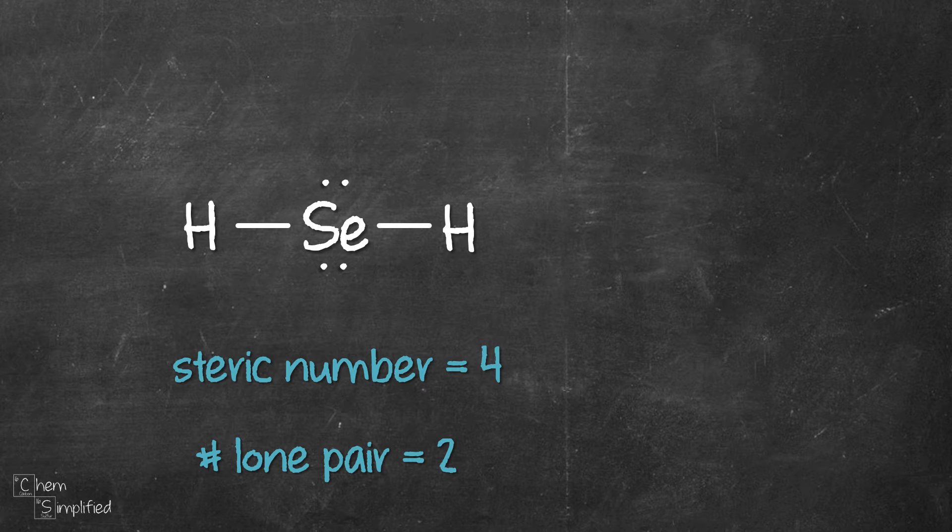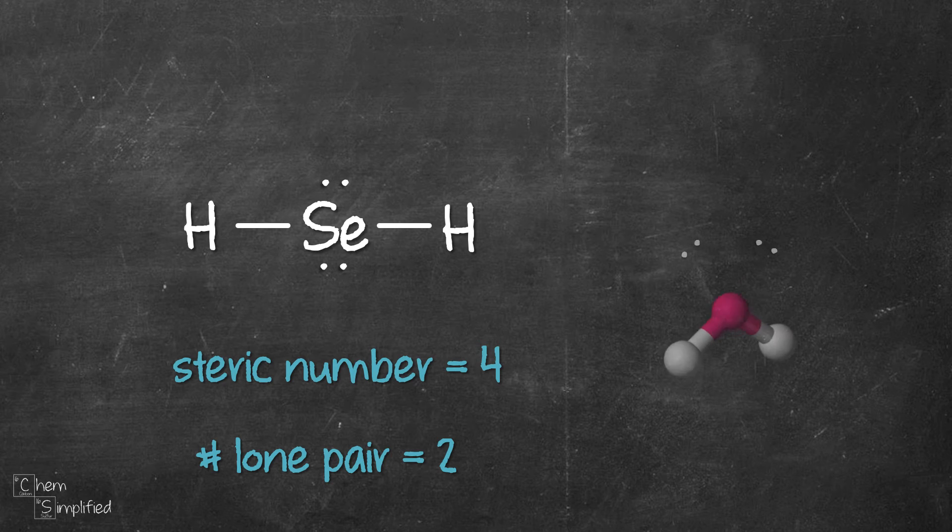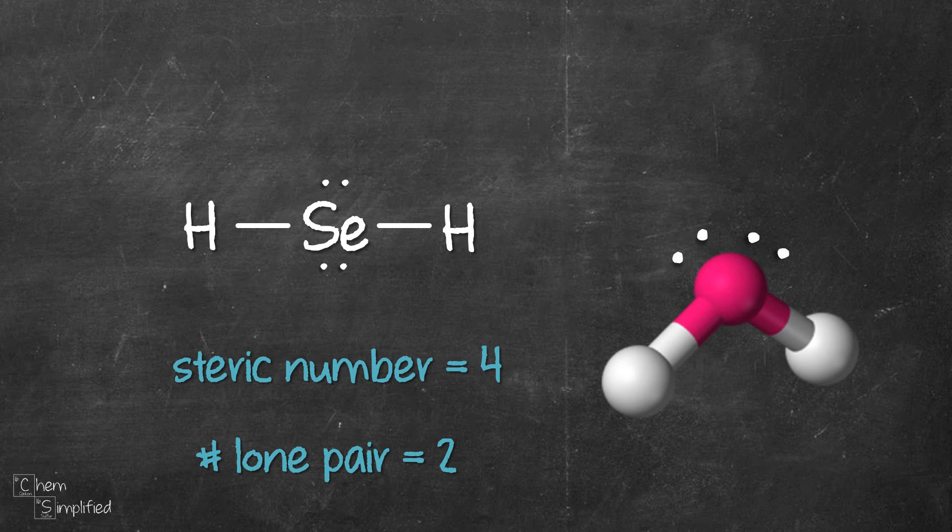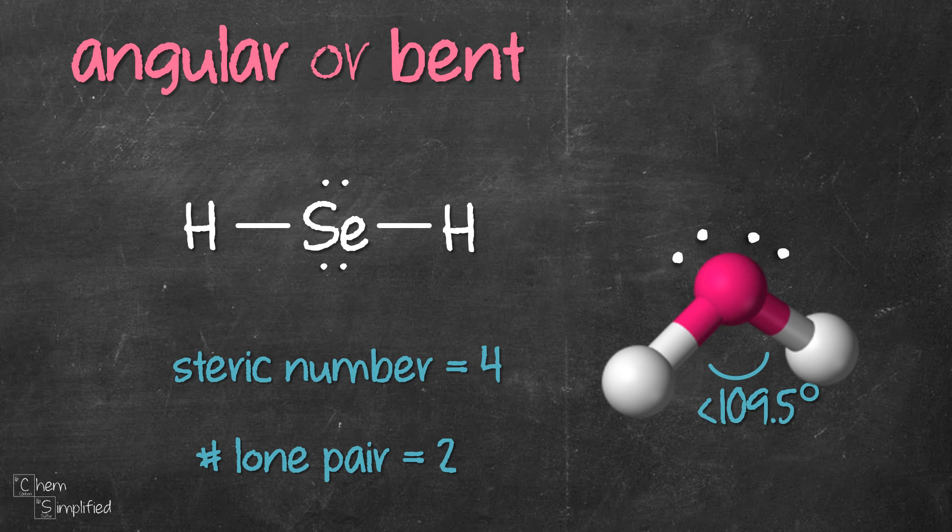Now these two groups and two lone pairs will arrange themselves and it will look like this. Look familiar? The bond angle for this type is the same as we've mentioned before, usually around 104 to 109 degrees depending on the terminal atoms. We call this angular or bent.